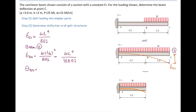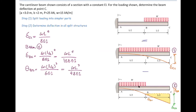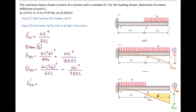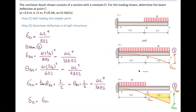After determining the deformation and slope at B, we find the indirect deflection at the right end using the triangle. Tangent of theta B equals delta C2 divided by L/2, so delta C2 equals theta B multiplied by L/2, which simplifies since tangent of theta equals theta for small angles. The total deflection at the right end is delta C1 minus (delta B2 plus delta prime C2). Plugging in and simplifying, the total deflection equals 41 divided by 384 times WL⁴ divided by EI, which is the final answer for this problem.